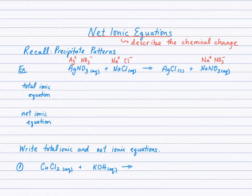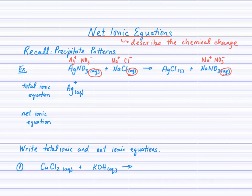In the total ionic equation, we take any compound that is aqueous and show those ions dissociated — broken up and separated in water. We'll do that for silver nitrate, sodium chloride, and sodium nitrate. So we start with the silver ion: symbol Ag, charge positive 1, AQ — because that ion is surrounded by water molecules, hydrated in solution. Then the nitrate ion: symbol, charge, AQ.